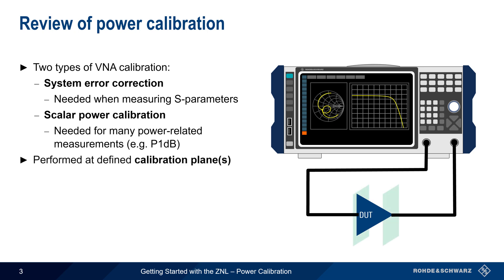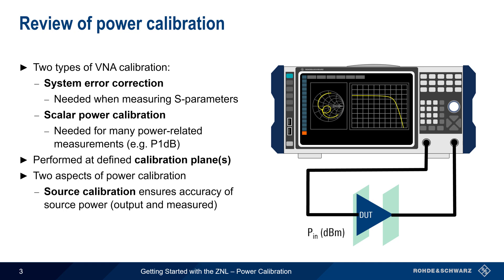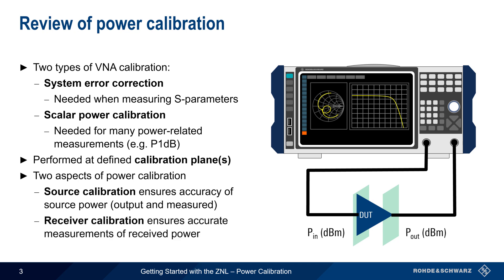Like system error correction, power calibration is performed at defined calibration planes, and thus can correct for loss, gain, or frequency dependencies in the test setup. There are two general types of power calibration. Source calibration ensures the accuracy of both the source or stimulus power, as well as the accuracy of the measurement of that power. Receiver calibration, on the other hand, ensures that the received power is being accurately measured.